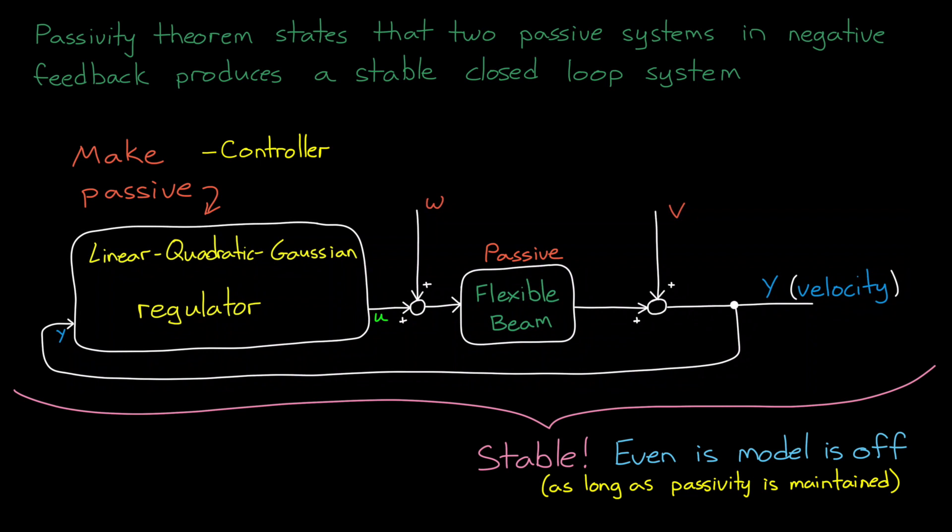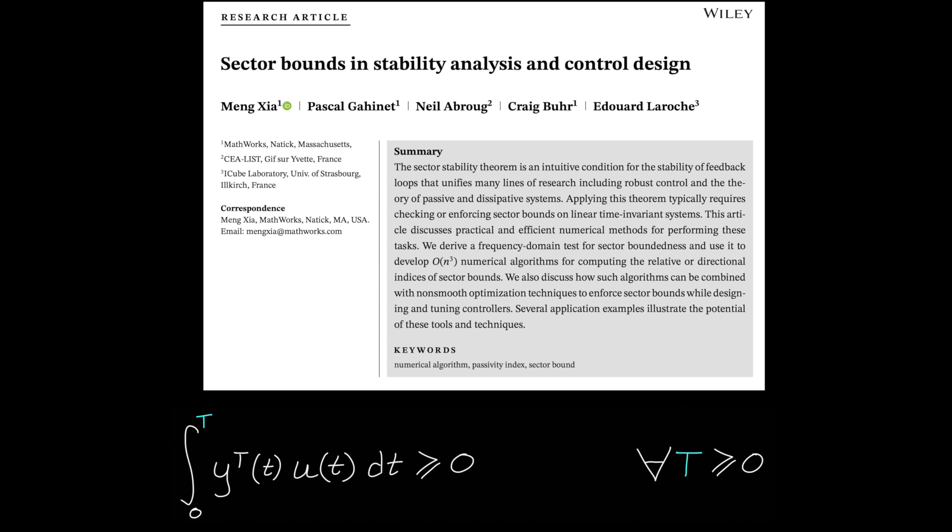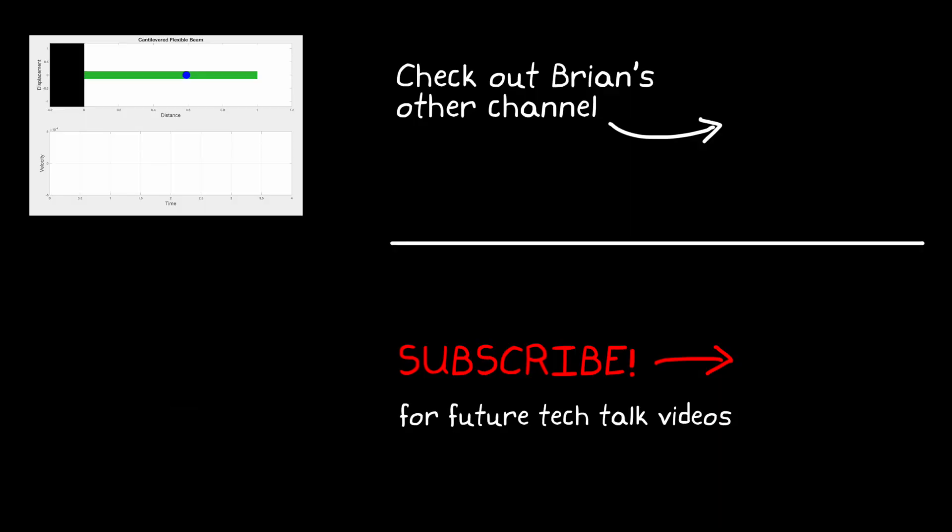Alright, this is where I'm going to leave this video. If you want to understand how Systune is able to develop a passive controller, or if you want to understand how a sector-bound constraint, like the one we use to check for passivity, can be used to investigate other robust system properties, check out the paper that I've linked to in the description. Don't forget, there are more resources in the description to everything else I mentioned in this video. If you don't want to miss any future Tech Talk videos, don't forget to subscribe to this channel. Also, if you want to check out my channel, Control System Lectures, I cover more control theory topics there as well. Thanks for watching, and I'll see you next time.